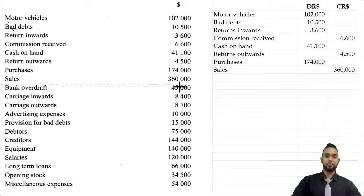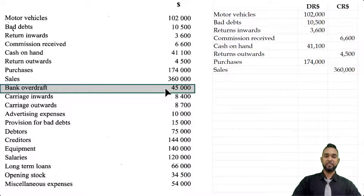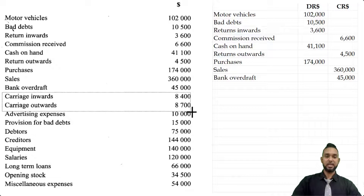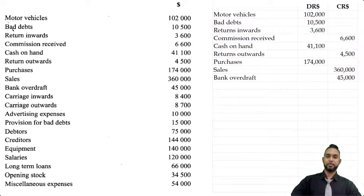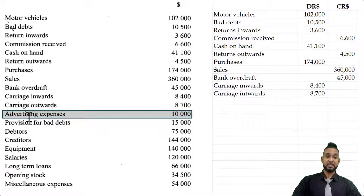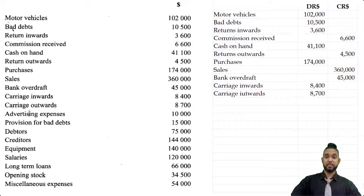Bank overdraft is a liability — we owe the bank money — and liabilities go in the credit column. Next we have carriage inwards and carriage outwards; both of those are expenses, so we put them both in the debit column. We also have advertising expenses, which as the name says is an expense item, so that goes in the debit column as well.